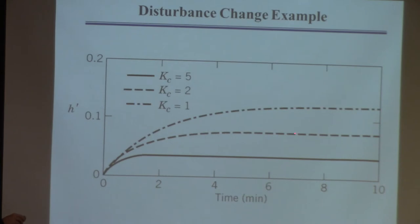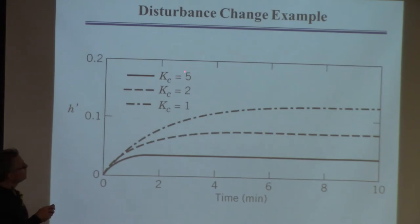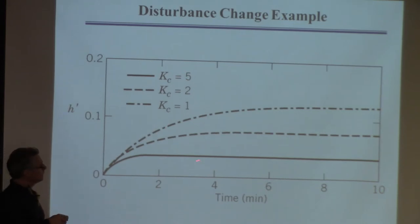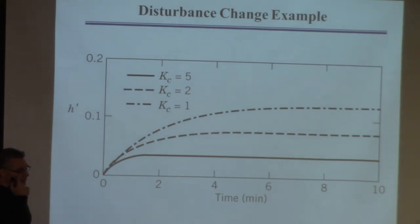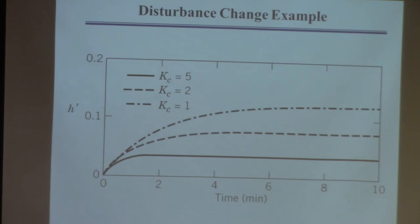If you go to KC of two, it gets to here; if you go to five, it gets there. So you might say you should try 10, then 20, then 100, and then it'll start getting right down there. But typically that's not going to work, as I'll show you. So that's example two. These are algebraically simple — nothing complex about the manipulations done here.